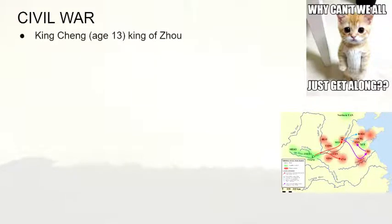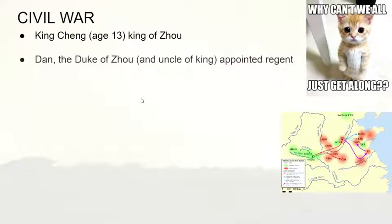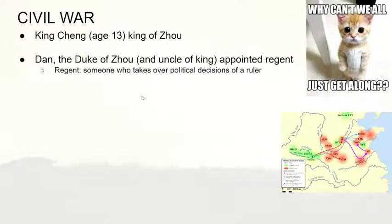As expected, a civil war occurs. King Cheng, the next king of Zhou, was 13 years old. The Zhou court did not believe that King Cheng could be a good ruler at that point, so they had Dan, the Duke of Zhou — the uncle of the king — appointed as regent. A regent, by the way, is someone who takes over political decisions on behalf of a ruler.